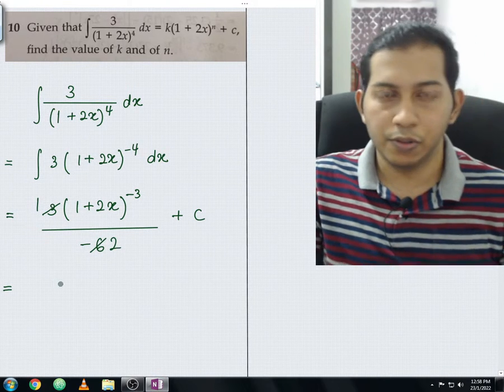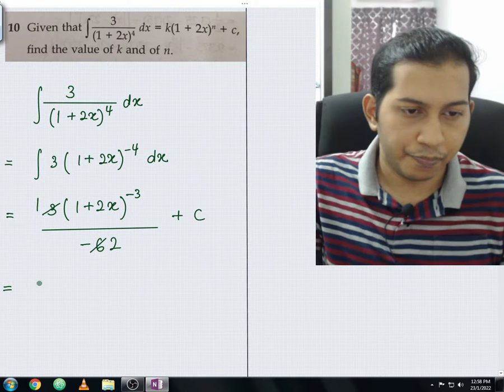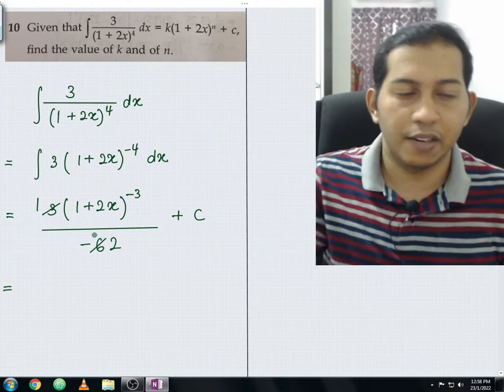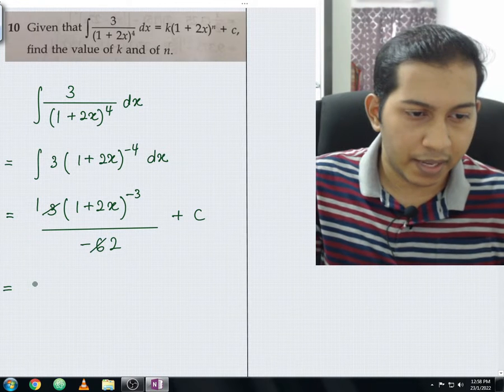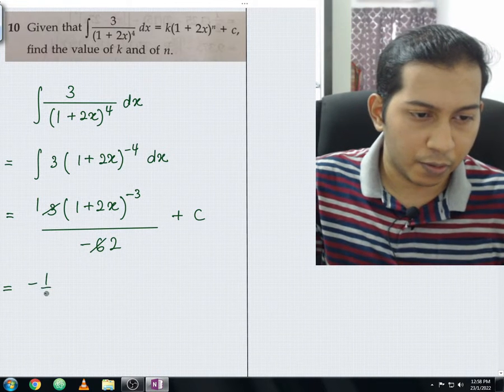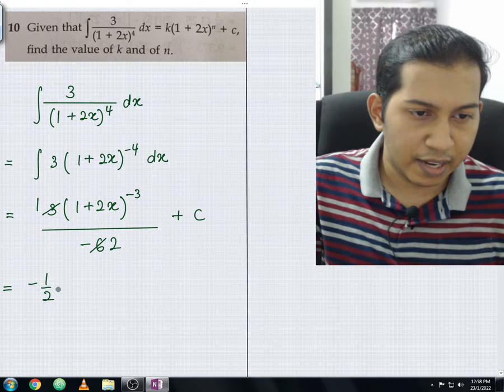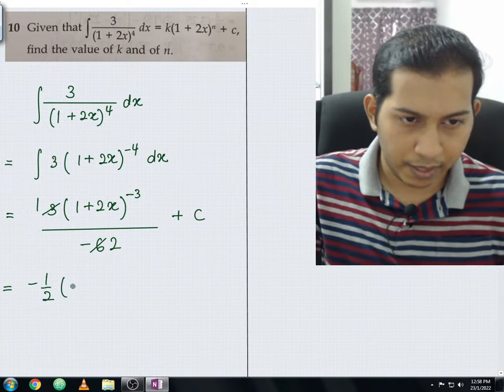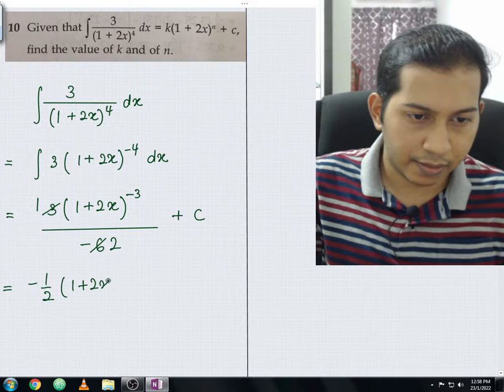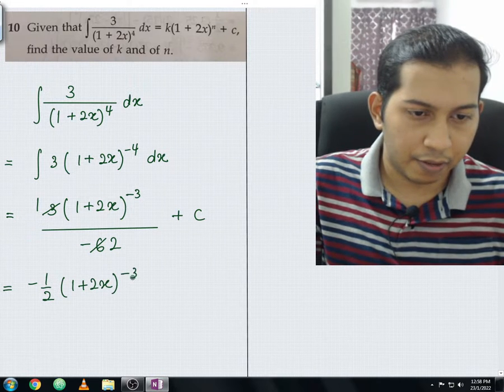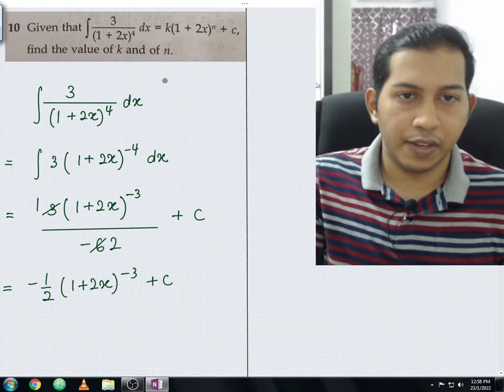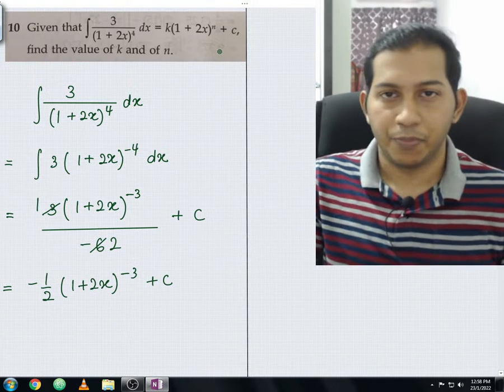From here, this negative 1 over 2 you can split into a single fraction, where it will become negative 1 over 2. And then this index, you put it in the middle, where it will become (1+2x) to the power of negative 3 plus with c. Why? We need to make sure that it fulfills this expression.